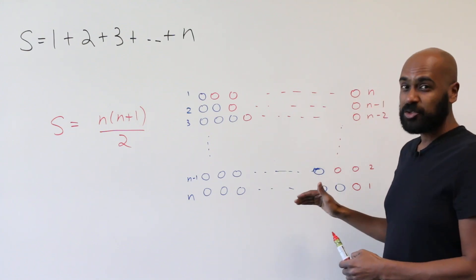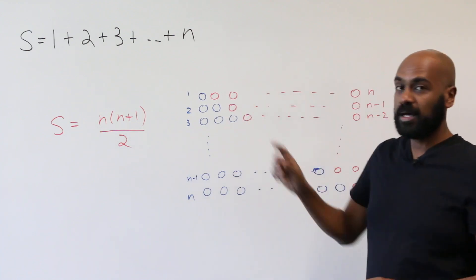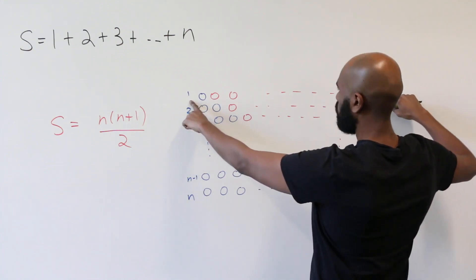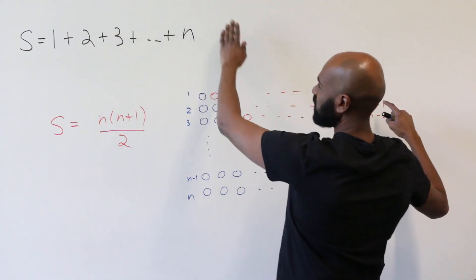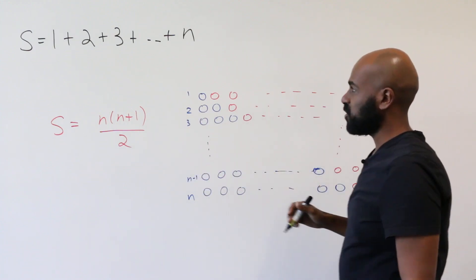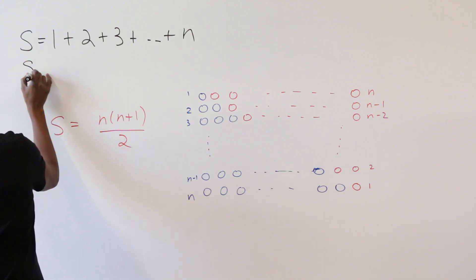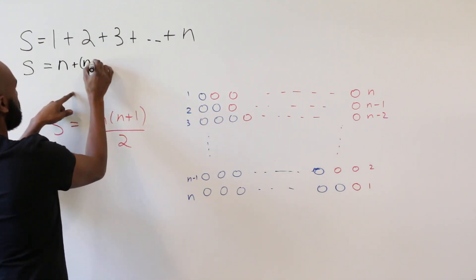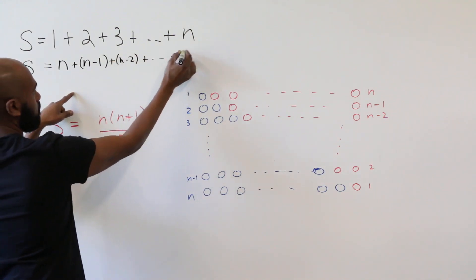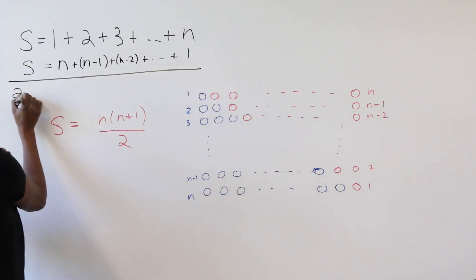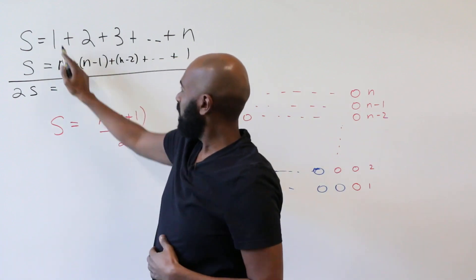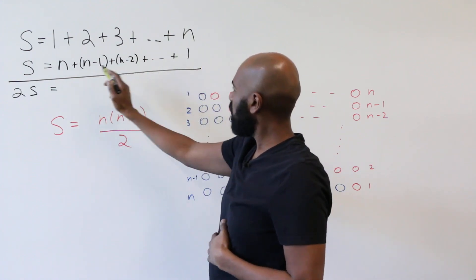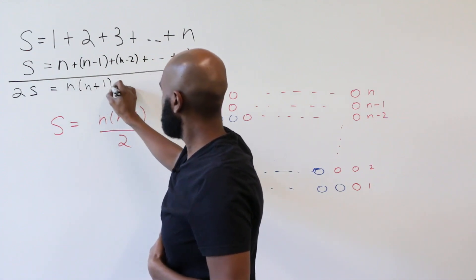This process actually mimics one typical proof for this formula. We've paired every single positive integer with what appears on the opposite side of the sum. We could rewrite the sum in the backward direction, matching n with one, n minus one with two, et cetera. Adding column by column, we have 2S on the left, and n plus one appears in each column, with n such columns. So 2S equals n times n plus one, which gives us our formula.